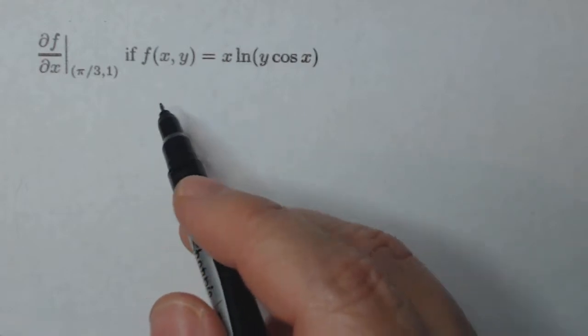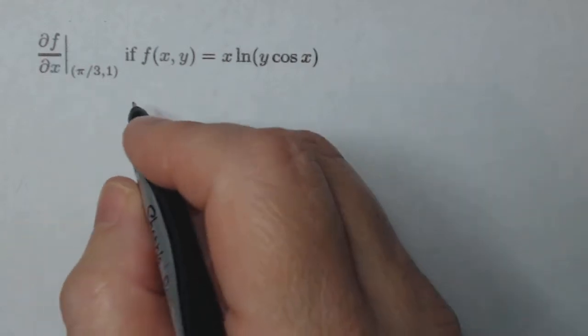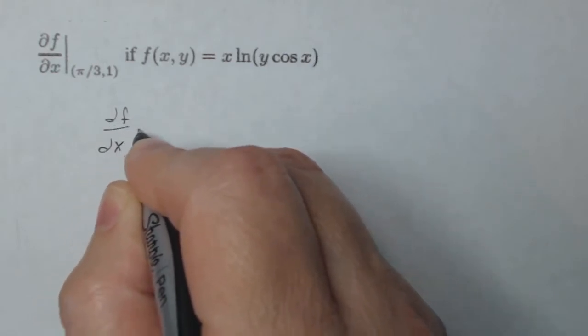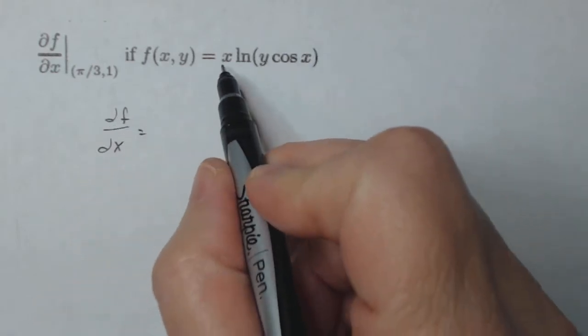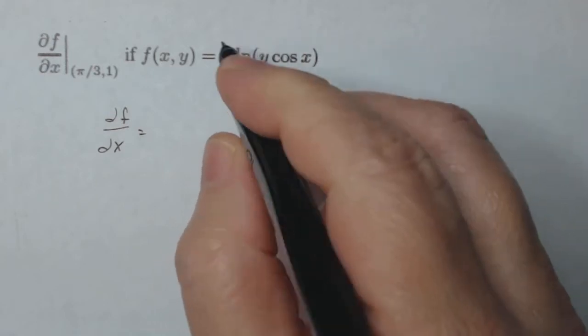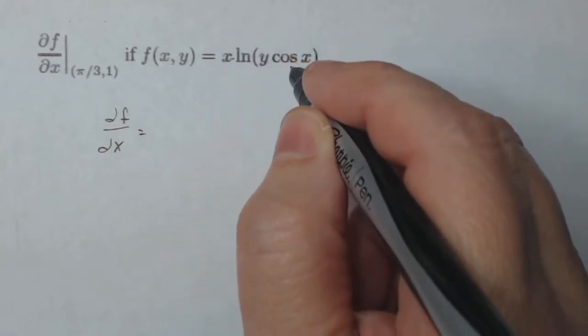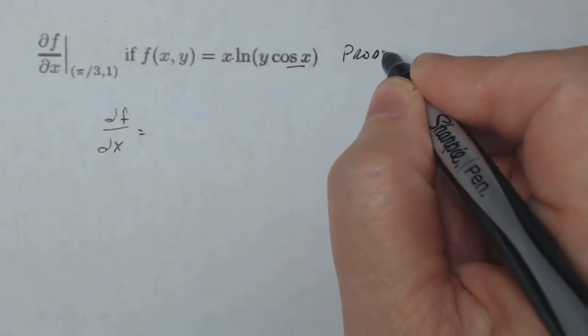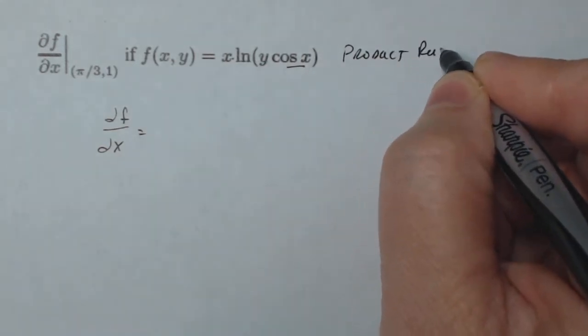So let's start with the partial of f with respect to x. The partial of f with respect to x of my function. Well, there's an x here multiplied by the natural log and there's an x inside the natural log, so that means I have to use the product rule in order to do this derivative.